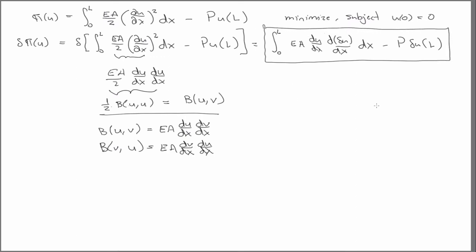For this to have a stationary value, it must equal zero. We're going to use the integration by parts identity on this first term. I just did that integration by parts identity to shift the differentiation off of that del u.